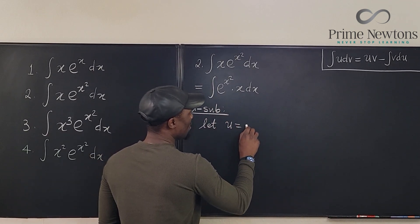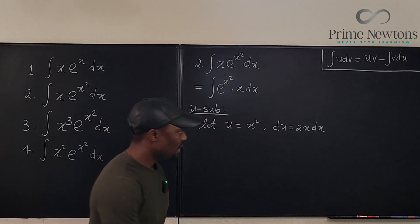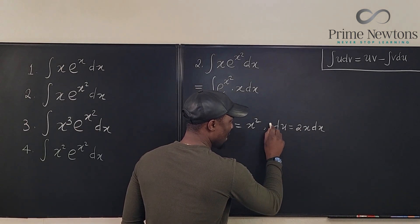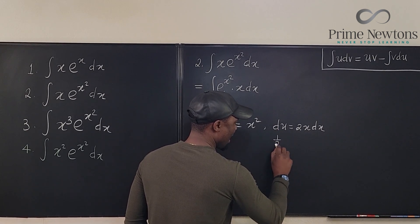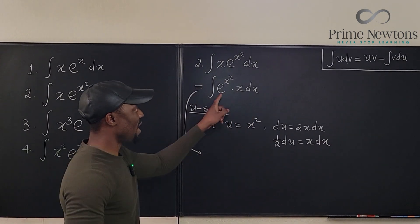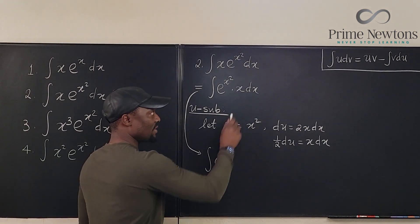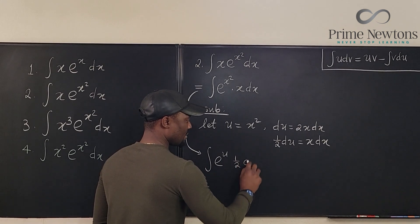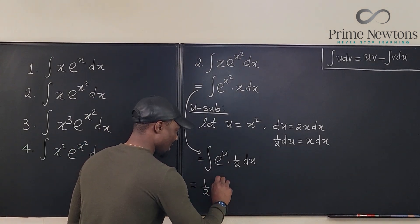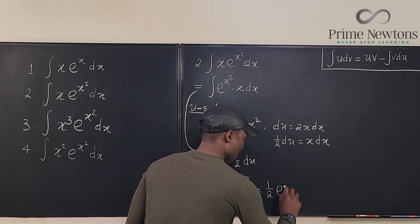Let u = x², so du = 2x dx, which means one half du = x dx. Substituting in, the integral becomes the integral of e^u times one half du, which equals one half times the integral of e^u du. Integrating gives one half·e^u plus C.